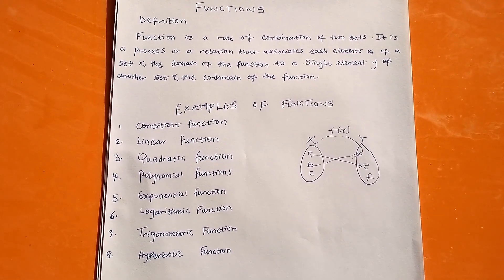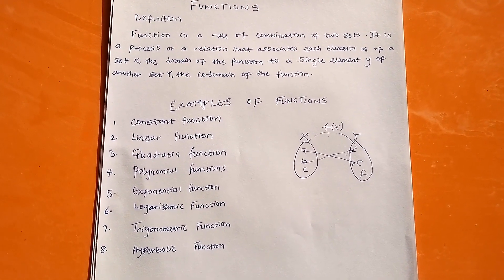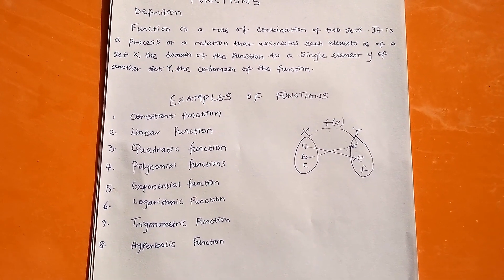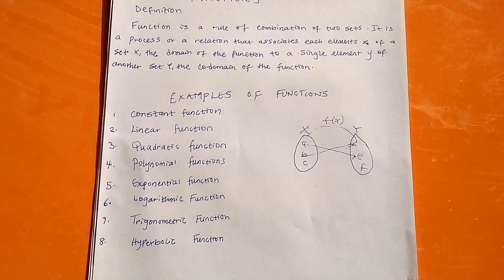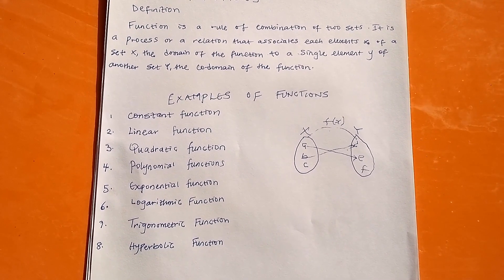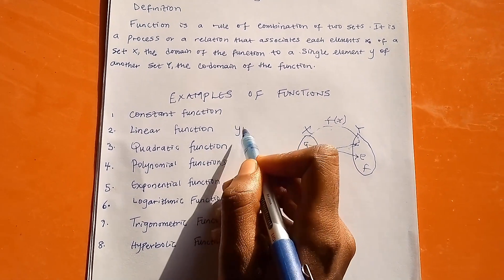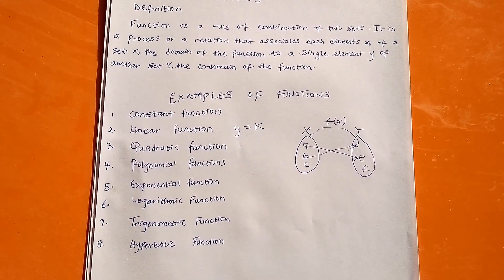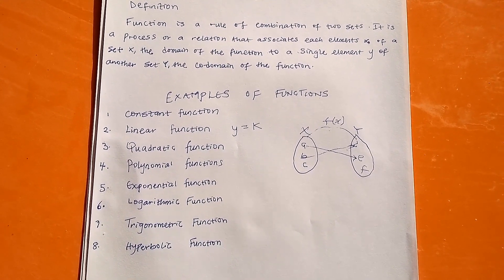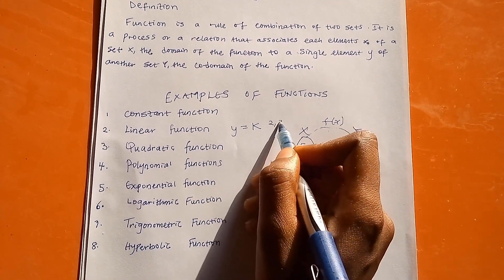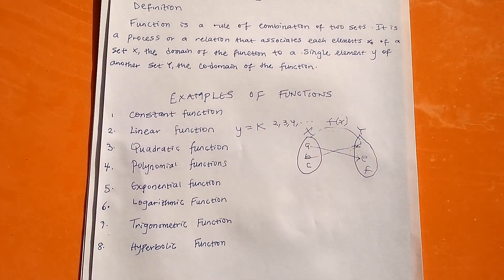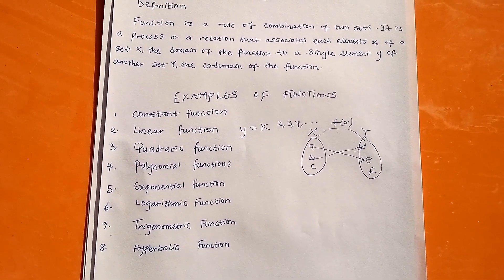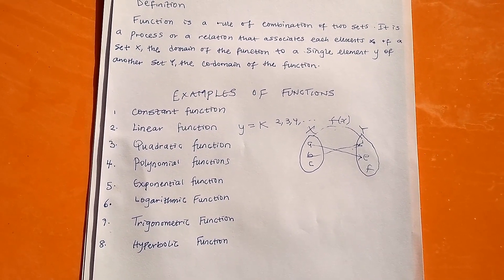It's not so difficult to understand. Now let's look at examples of functions. Functions have many examples, but we have eight listed here. Number one is the constant function. A constant function is represented by the expression y equals k, where k is a constant — for example, k can be 2, 3, 4, and so on. It should just be a single number with nothing attached to it. The graph is usually a straight line parallel to the x-axis.